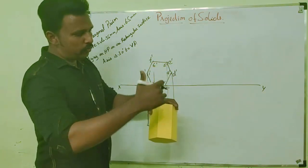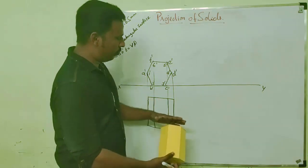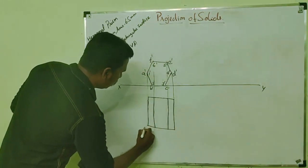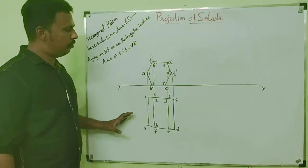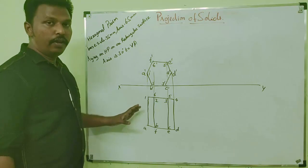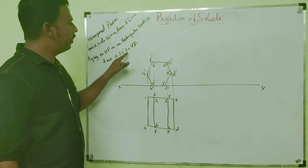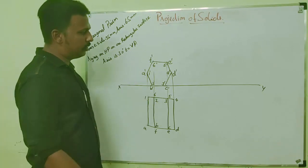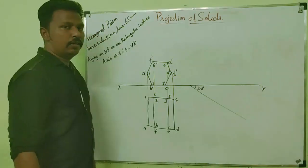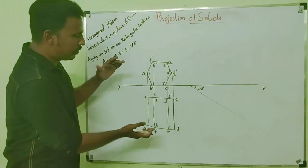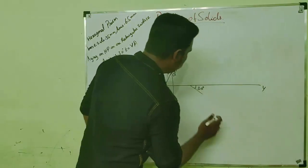If you view from the top, the ABCD face will be at the bottom and the 1, 2, 3, 4 face will be at the top. Now I have named all the corners. Then we have to include the inclination of the axis — the axis is inclined at 30 degrees to VP, so we have to add that inclination. We have to draw a 30-degree line here, and along that 30-degree line we have to copy the same diagram in the exact dimensions. This line is the axis.